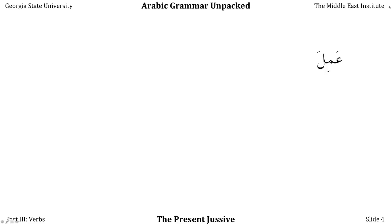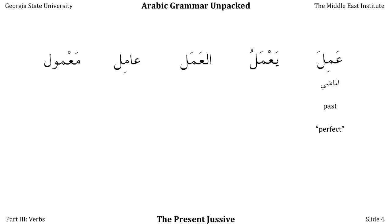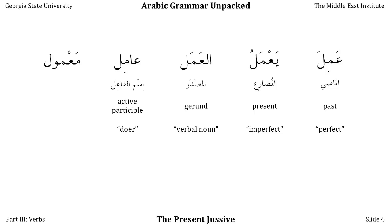There are five forms of a verb: عَمِلَ the past tense; يَعْمَلُ the present tense, rendered here in the muḍāriʿ marfūʿ. عَمَل, the act of working — the gerund or verbal noun. عَامِل, a worker — the active participle, the doer of the action. And مَعْمُول, something that has been worked — the passive participle. The first is called الماضي, the past or perfect. The second, المضارع, the imperfect or present tense. The third, المصدر, the gerund or verbal noun. The fourth, the active participle. And the fifth, the passive participle.